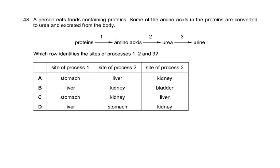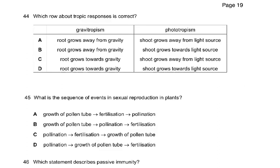Next: a person eats food containing proteins; some amino acids are converted to urea and excreted. Proteins are converted to amino acids by the digestive enzyme pepsin in the stomach and small intestine — process one is the stomach. Process two is amino acids to urea: deamination takes place in the liver. Process three: urea is removed from the blood by the kidney and passed out as urine. The answer is A.